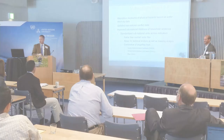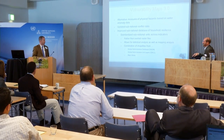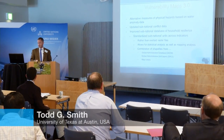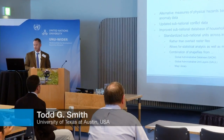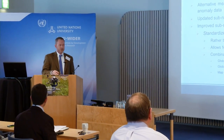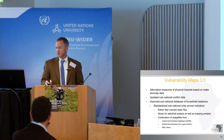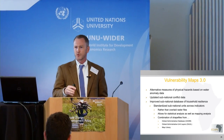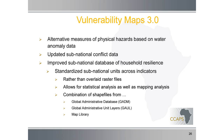I'm going to talk a little bit about the next iteration of our maps, which in this app-centric world we're calling version 3.0. So first we're starting with different alternative measures of physical hazards. We have some new data on water anomalies — on too much water, abundance, or too little water, a scarcity of water.